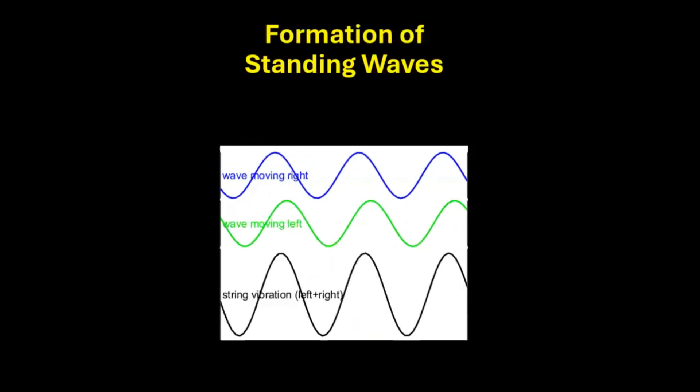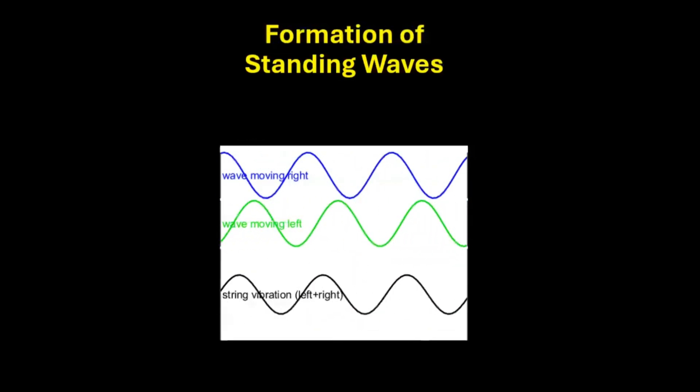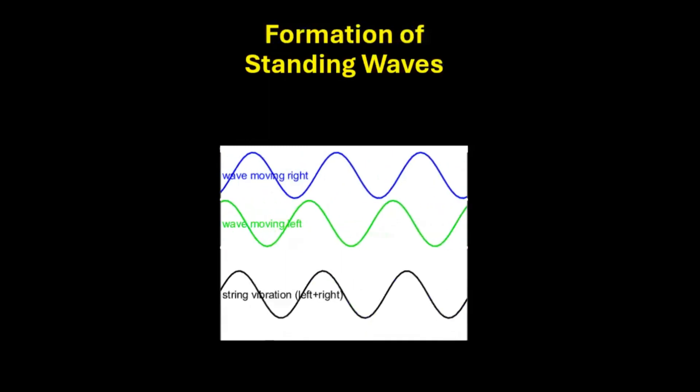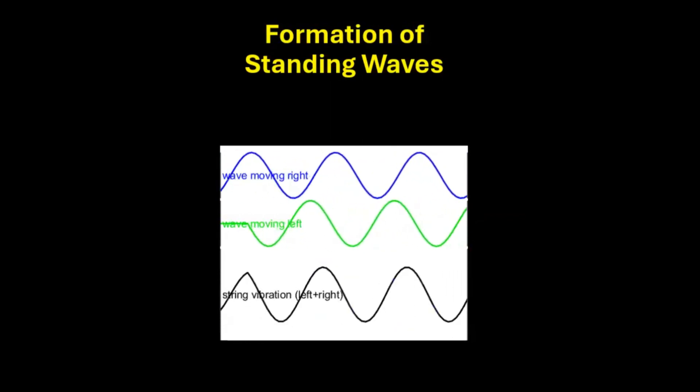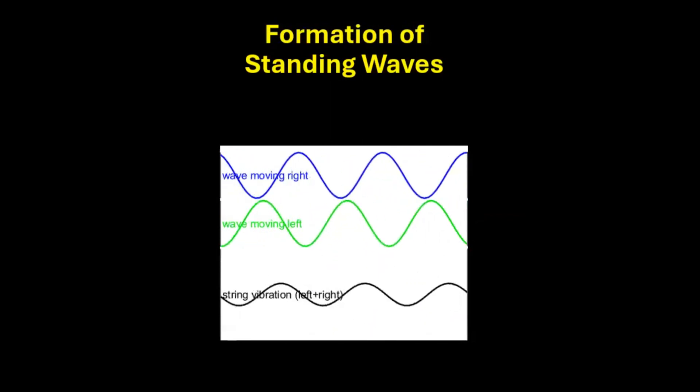When these two traveling waves, moving in opposite directions, interfere with each other, they interfere constructively to produce antinodes and destructively to produce nodes.